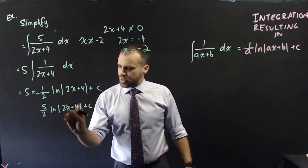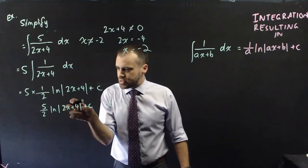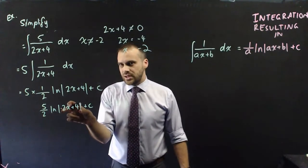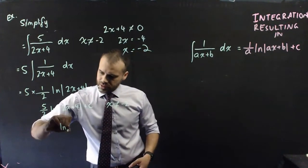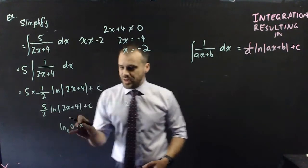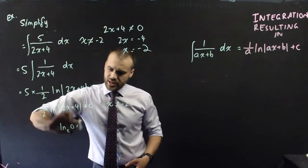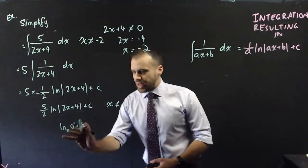Because if we put negative 2 in here, we'd have 0 here. And if we had 0 here, we'd be asking for ln e to the 0 equals x. And there is, I shouldn't say x equals k. And that can't happen.